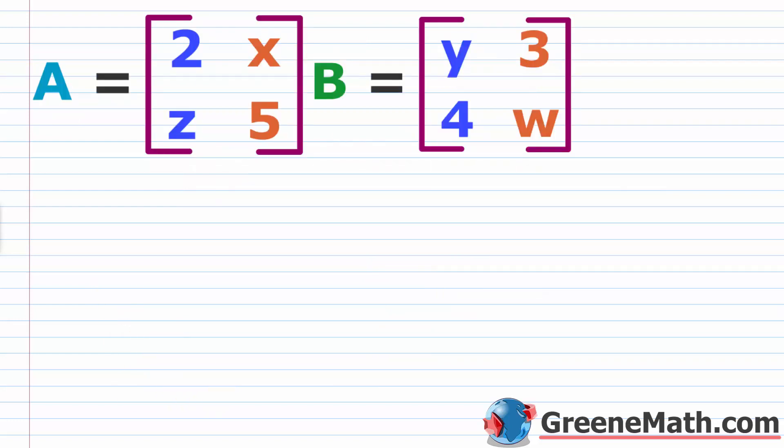Another topic in this section is how to determine if two matrices are equal. The rule is that two matrices are equal if and only if they have the same size — the same order. So if one is 3 by 3, the other must also be 3 by 3. They must have the exact same order, and then each corresponding element has to be the same.